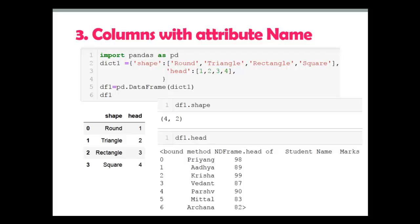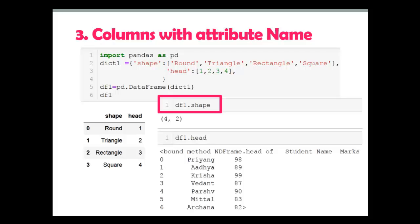For the third example, I have created a DataFrame where the column labels are 'shape' and 'head', which are attributes and methods of the pandas DataFrame. If you use dot notation, it works like a pandas attribute and gives you the shape — 4 rows and 2 columns. Similarly, 'df.head' shows the first 5 rows instead of the column values 1, 2, 3, and 4.